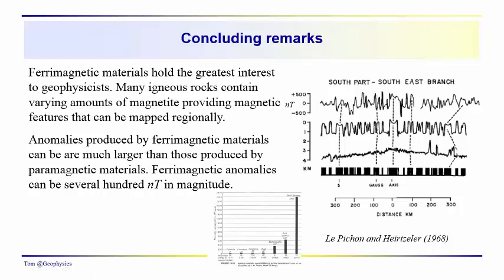Next time we're going to start talking about simple geometrical objects and interpretation of magnetic anomalies, starting with the horizontal cylinder. We'll also look at Poisson's relationship, which establishes a relationship between the gravitational field of an object and the magnetic field. Hope to see you next time — thanks for joining us.